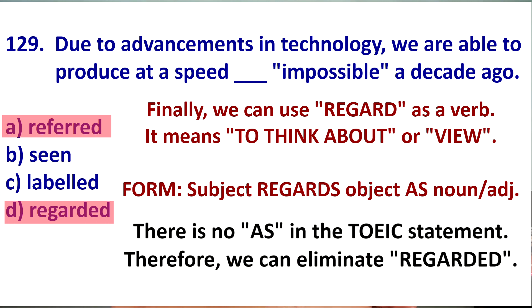But, here, we do not have an as. So, to get this answer correct, it would have to be regarded as impossible. Because, people regard the speed as impossible. The speed that was regarded as impossible. So, we don't have as.